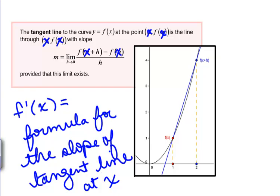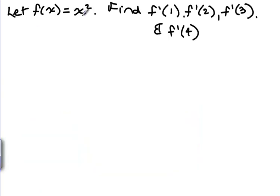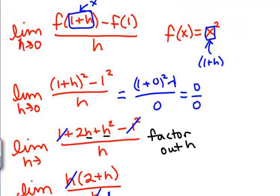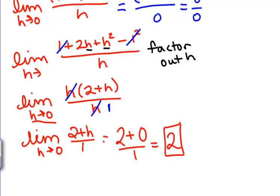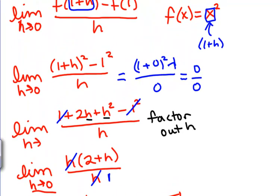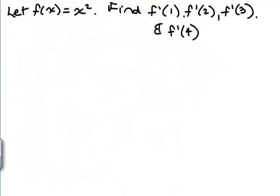So for example, if we look back at f of x equals x squared, we've previously found f prime of 1. But we could do the exact same computations as we did in this example, but with x's there instead of 1's. So let's try it.